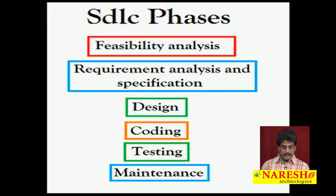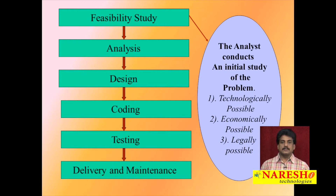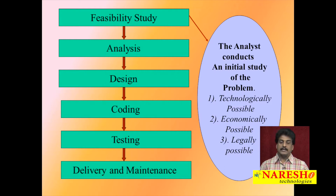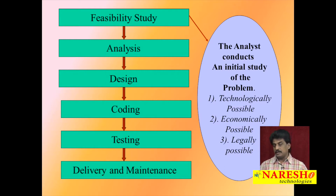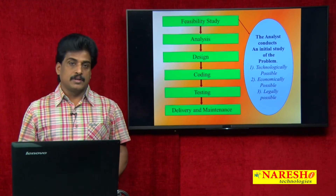Let me explain the clear phases of software development life cycle. Feasibility study, analysis, designing, coding, testing, delivery and maintenance — these are the six phases as per IEEE standards.